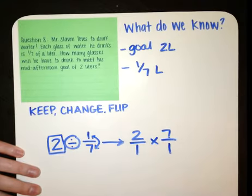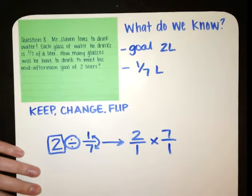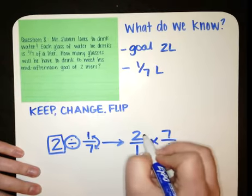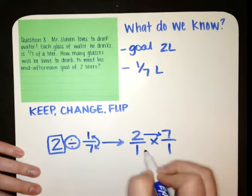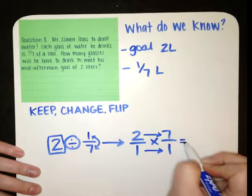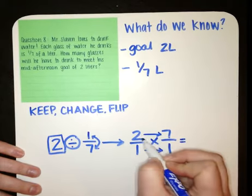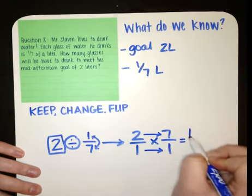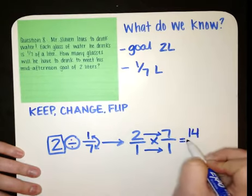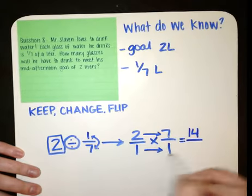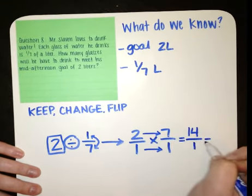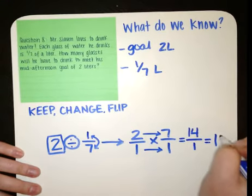Our new problem is two over one times seven over one. To solve this, we are going to multiply top times top and bottom times bottom. When we multiply our numerators, we get two times seven is 14. And for our denominators, one times one is one. We know that 14 over one is the same as 14 wholes.